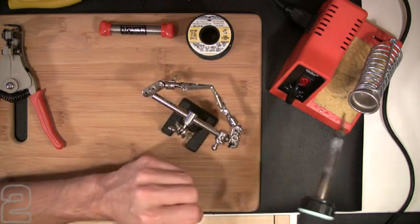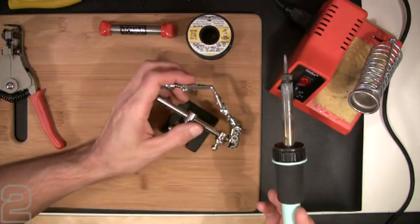You don't need a fancy base station or soldering station, just get one that plugs directly into the wall. This is a 35 watt 120 volt, about 40 bucks or so. You can find them all over the place.